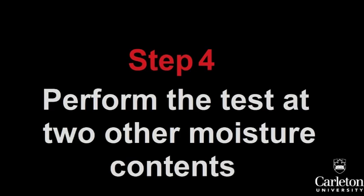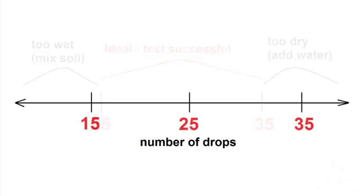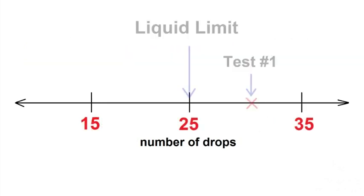You will need to repeat the test successfully two more times to get three data points in all. For the second and third tests, increase the water content by adding water to your sample and mixing. This will reduce the number of drops.